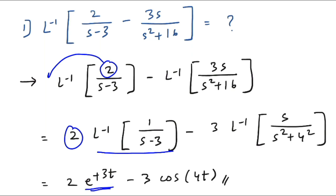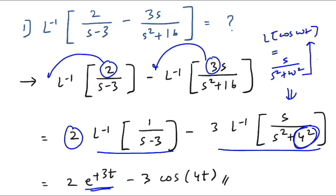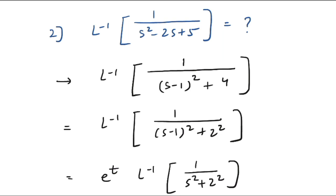The constant 2 is taken outside, and the Laplace inverse of 1/(s−3) is e^(3t). Similarly, 3 is taken outside, giving 3 × Laplace inverse of s/(s²+16). Writing 16 as 4², this matches the format s/(s²+ω²), which is the Laplace of cos(ωt). Going backwards, the answer is cos(4t). So the final answer is 2e^(3t) − 3cos(4t).